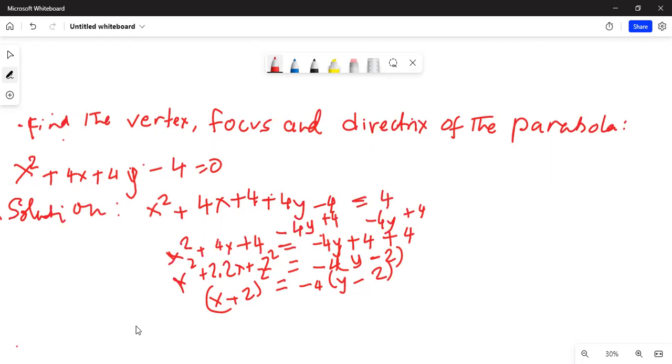Now if we look at the standard form of a parabola, standard form is x minus h square is equal to 4p times y minus k.